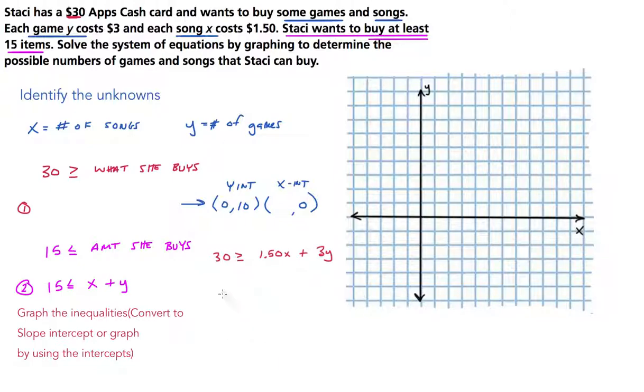We're going to do the same thing for the X-intercept. Plugging in zero for Y this time: 1.50X plus 3 times zero less than or equal to 30. 1.5 divided by 1.5 on both sides, and this comes out to be 20 less than or equal to X. So there's my X-intercept.